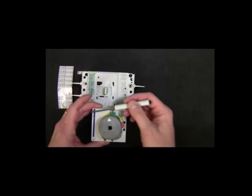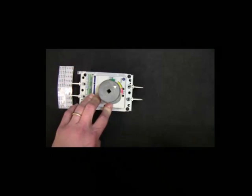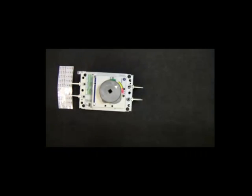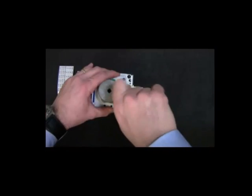Now position the rotary operator so that the fastener holes line up with the holes on the breaker. Insert the fasteners and apply torque to the specification, 9.73 inch pounds or 1.1 Newton meters.